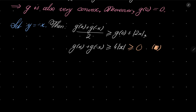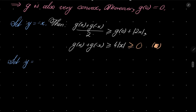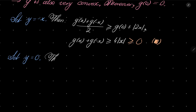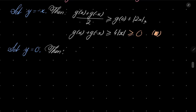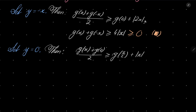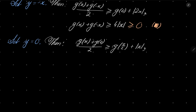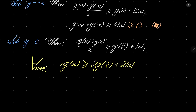Now let's set y = 0 in the inequality for g. We get g(x) + g(0) over 2 ≥ g(x/2) + |x|. Since g(0) = 0, we obtain the key inequality: g(x) ≥ 2g(x/2) + 2|x|, for every real number x.